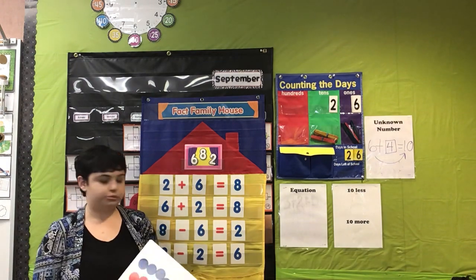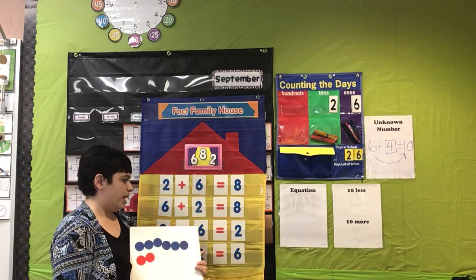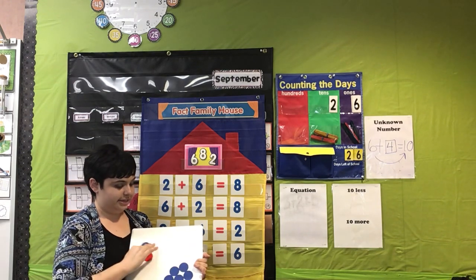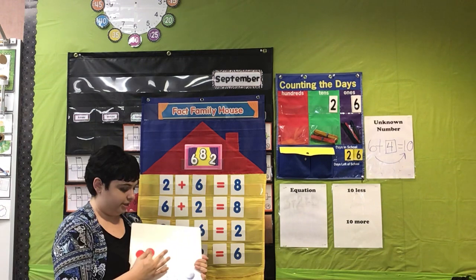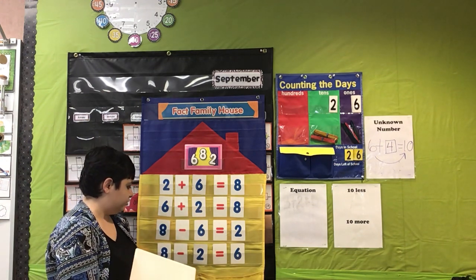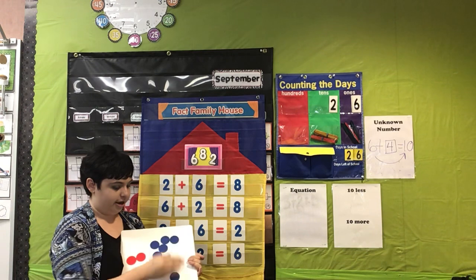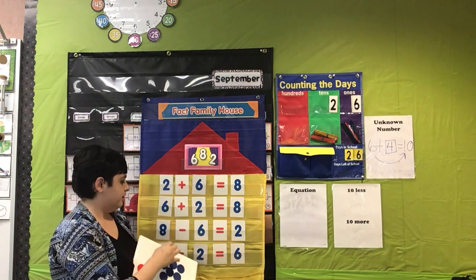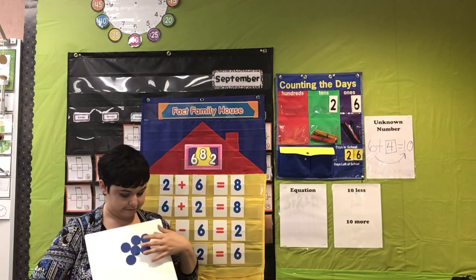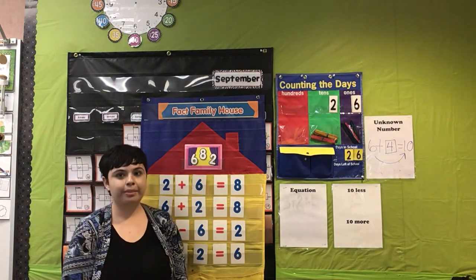Now we're gonna do something a little trickier — subtraction or take away. We're gonna start with eight, which is already on the board, and we're gonna take away six: one, two, three, four, five, six. And what are we left with? One, two — we're left with two. And that's what our equation says, so it's true. Next, we're going to do eight minus two equals six. We have eight on the board, and we're gonna take away two of our red ones: one, two. And what we're left with is one, two, three, four, five, six. So eight minus two equals six. That's all for Fact Families today — I hope to see you guys next time.